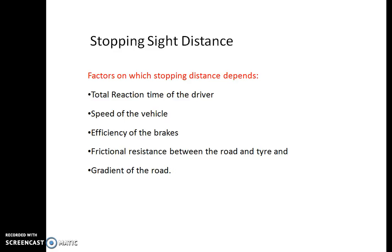When the driver perceives the object, he needs some time to think, and during that thinking time he travels some distance. After that he applies the brakes, but the vehicle does not stop immediately — it skips for some more distance. So totally, the stopping sight distance is the distance traveled during the reaction time of the driver plus the distance traveled after the application of the brakes. Together, these are called stopping sight distance.